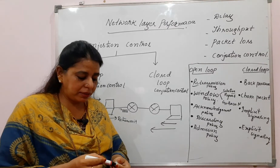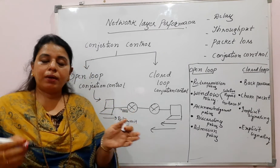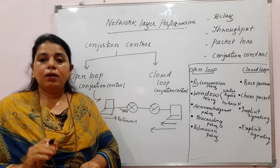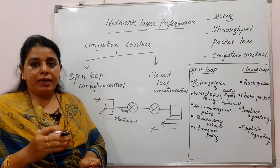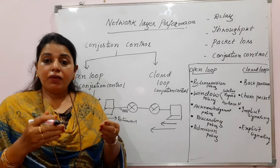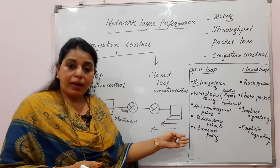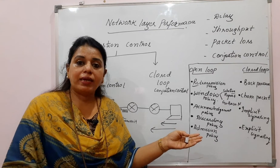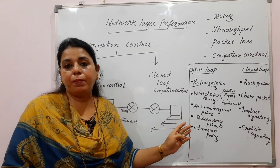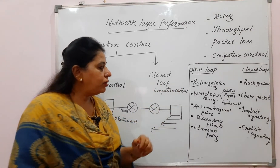The admission policy applies to virtual circuit networks, where a fixed path is established before data is sent. During the setup phase, if the router predicts that accepting a new request will cause congestion, it simply does not admit that request. By stopping the request at the very beginning, future congestion is avoided.